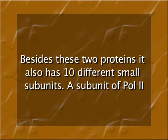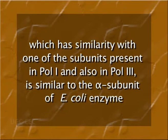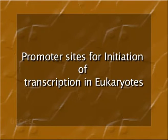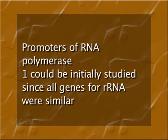Besides these two large proteins, eukaryotic RNA polymerase also has 10 different small subunits. A subunit of Pol II has similarity with one of the subunits present in Pol I and also in Pol III, and is similar to the alpha subunit of E. coli enzyme, helping in enzyme assembly. Apart from RNA polymerase, different transcription factors are also involved in transcription.